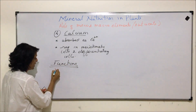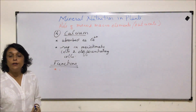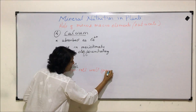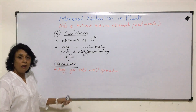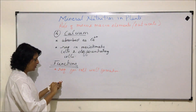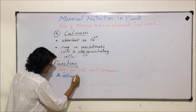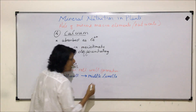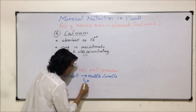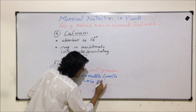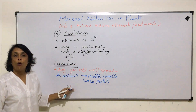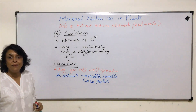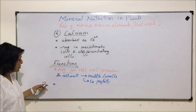The first and most important function of calcium is that it is required for cell wall formation. Specifically, within the cell wall, calcium is essential in the middle lamella. The middle lamella is made up of calcium pectate. So when we write the function, we say it helps in cell wall formation, and within the cell wall, calcium is present as calcium pectate in the middle lamella.